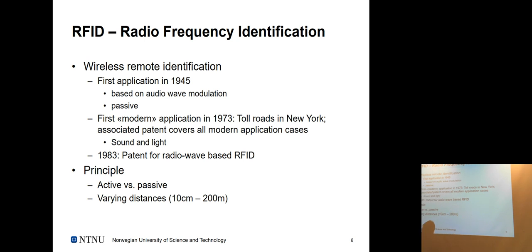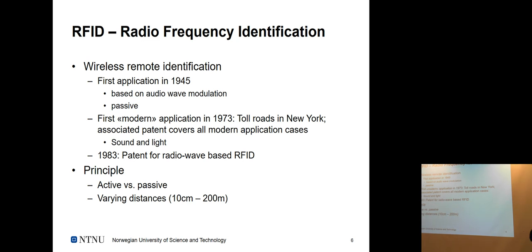RFID's main purpose is to identify individuals or objects unambiguously and wirelessly. A practical example is Norway's AutoPASS system — a passive tag in your car that registers every time you pass a toll booth and collects invoices automatically. RFID actually originated in 1973 in New York as a prototype for toll road payment management — it's far from new technology.